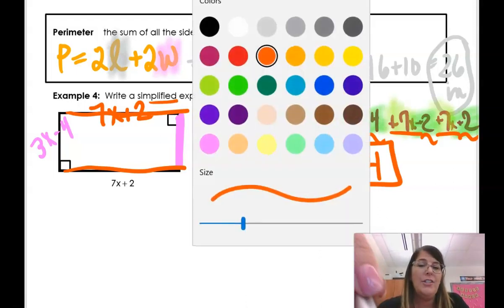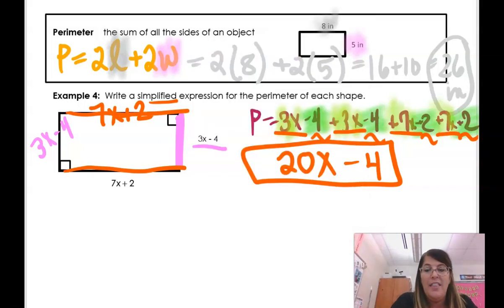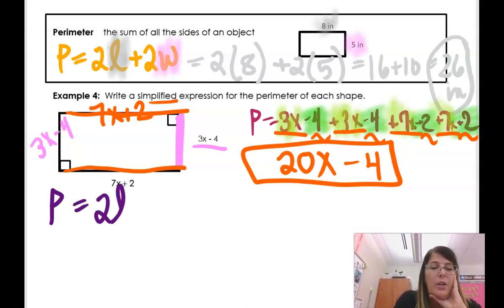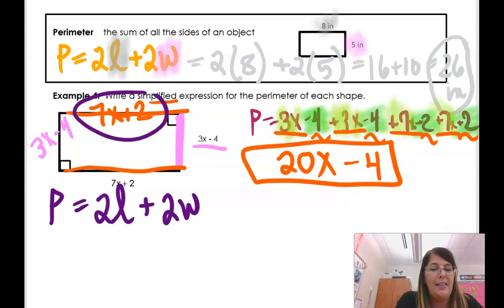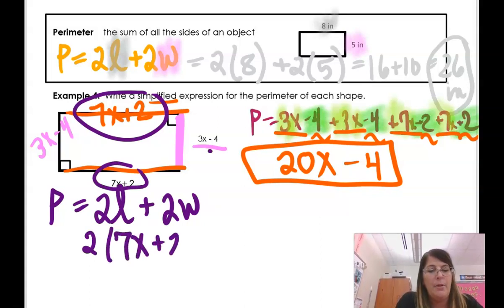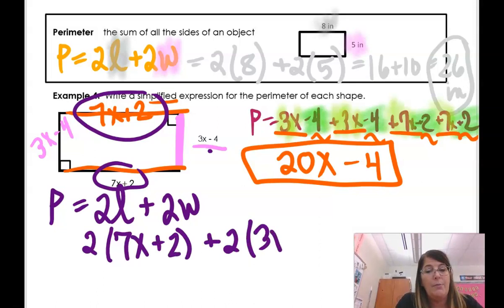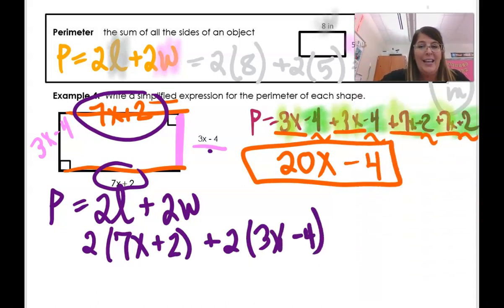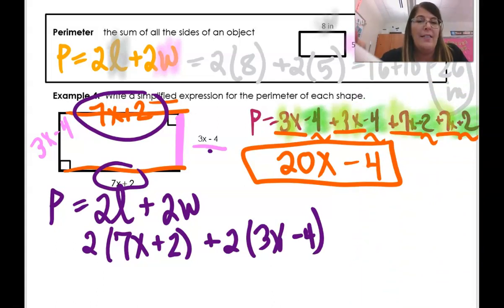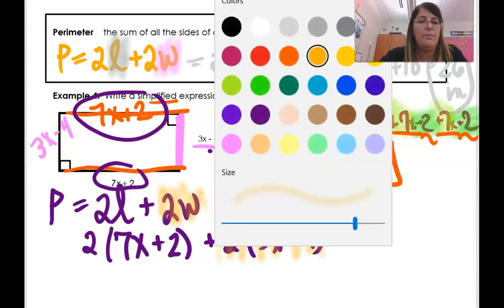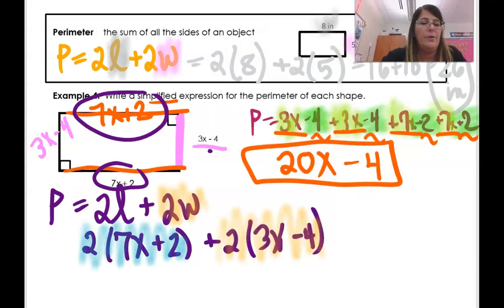Now, we're in algebra, so let's actually practice using the formula to do this. This is the answer, and if that's how you go about doing it, that's absolutely fine. But I want to show you how to use a formula to do this. 2 times L plus 2 times W. So this is the length. The length is here, and the width is here. So 2 times 7x plus 2 plus 2 times 3x minus 4. And I can solve this. Once I look at this, this part here is the 2 times the width, and this part here is 2 times the length.